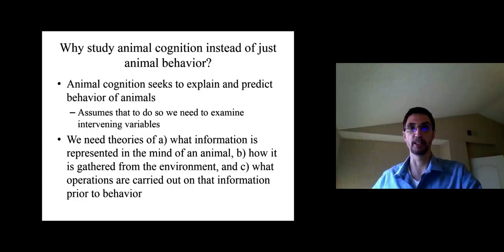But animal cognition researchers assume that in order to explain and predict animal behavior, we need to examine what they call intervening variables, variables having to do with what's going on inside the mind or brain of the animal. So you can't predict what an animal is going to do and you can't explain it without developing theories.